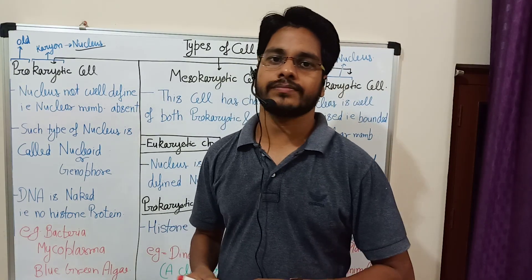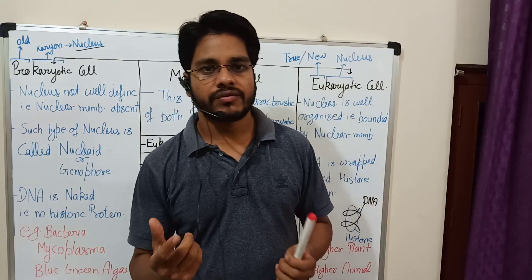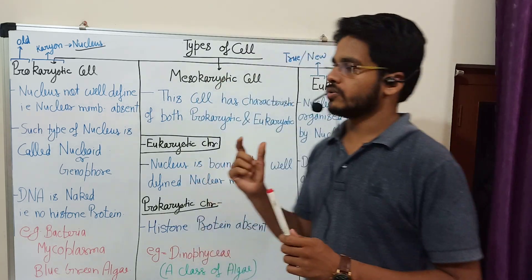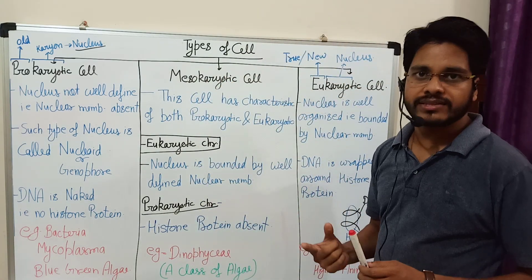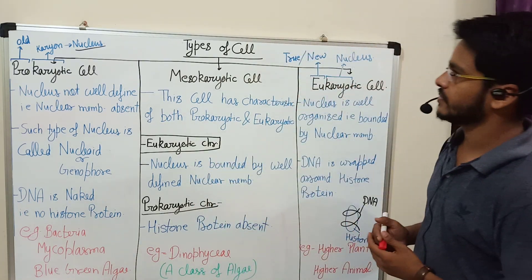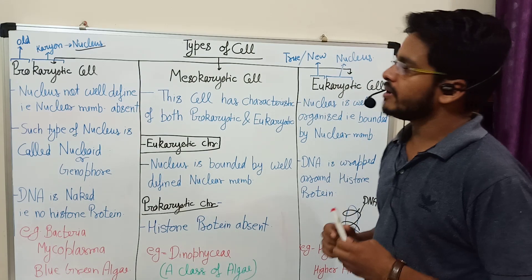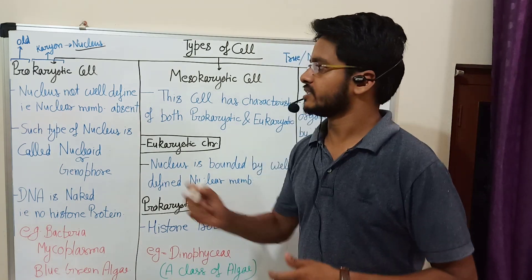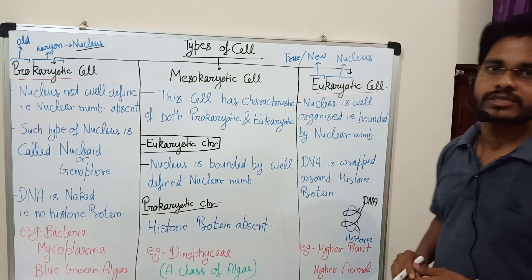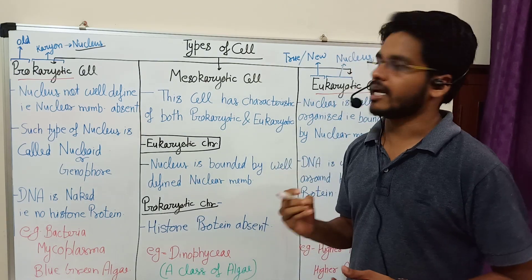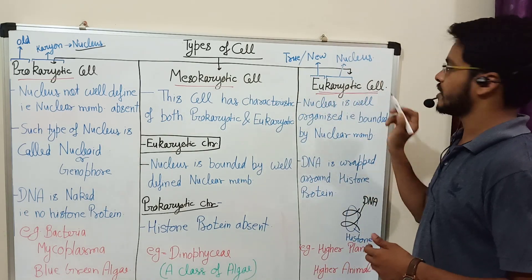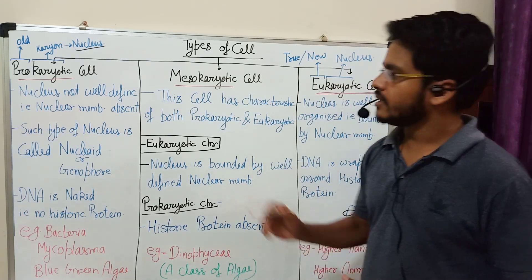Let's start today with a very important topic: types of cells. This topic is important for 11th class, NEET, and BSc first year. Normally we read only two types of cells — prokaryotic cells and eukaryotic cells — but actually cells are three types: prokaryotic cells, mesokaryotic cells, and eukaryotic cells.